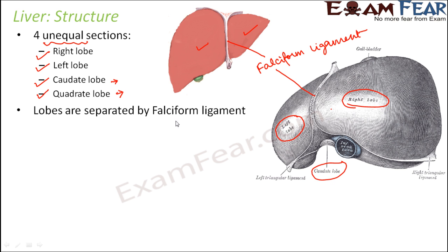If you compare the size of the right lobe, you will see that it is almost five times larger than the left lobe. The structure of the left lobe is such that it is slightly tapered towards one end. So the left lobe is tapering towards one end, and the right lobe is almost five times the size of the left lobe.